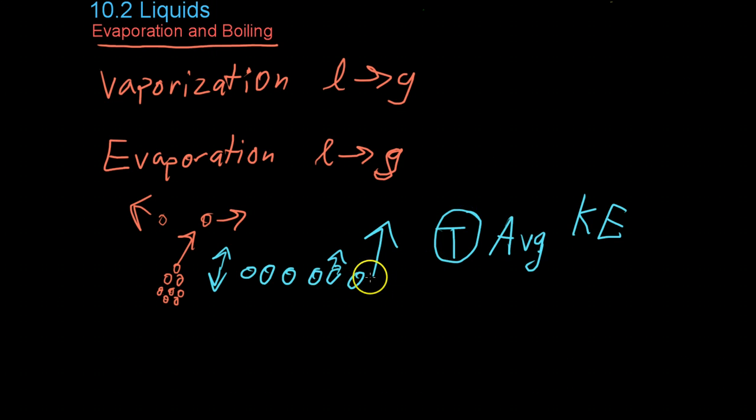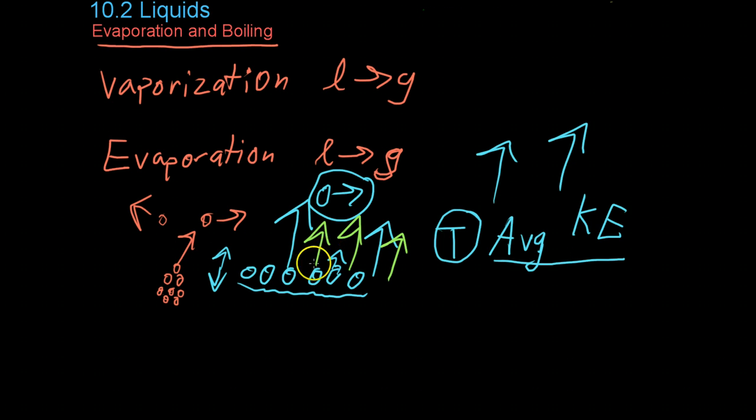This means that the ones with higher than average kinetic energy, once they reach the surface, are able to escape and have enough energy to overcome any attraction to the liquid molecules down here and enter the gaseous state. Though evaporation occurs in almost all liquids, if you raise the temperature and therefore raise the average kinetic energy, you're going to get a higher rate of evaporation. More molecules are going to start leaving because more of them have enough velocity to overcome the attractive forces that hold them in the liquid state.